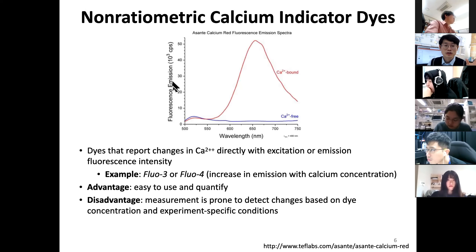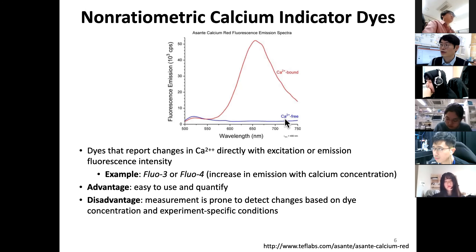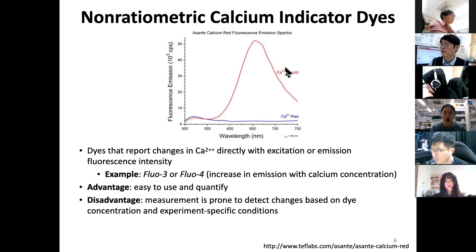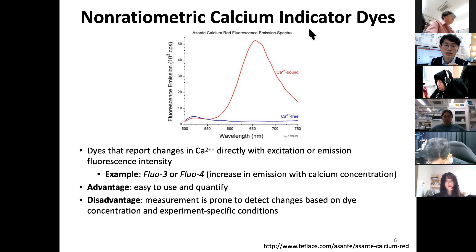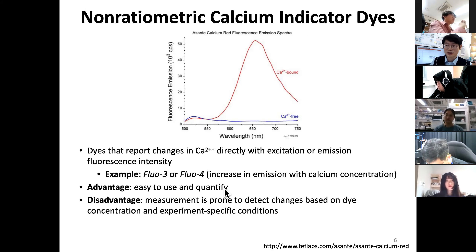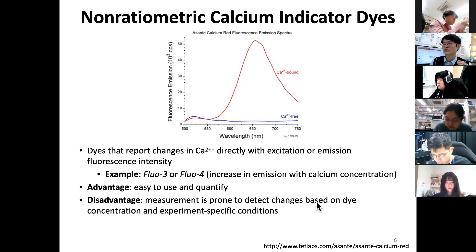This emission spectrum shows that the dye gives almost no fluorescence with no calcium, but gives a nice fluorescence spectrum peaking near the red or near-infrared range when it binds calcium. You just give this dye to cells or tissues, it permeates into neurons and acts as a calcium indicator — easy to use. Exogenous dyes are usually bright with a higher signal-to-noise ratio, making them easier to quantify. However, this measurement is prone to being affected by dye concentration variations.